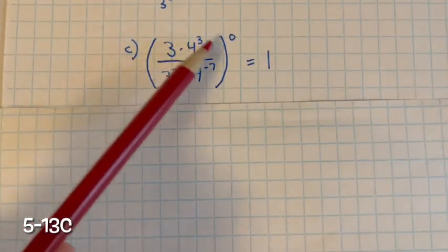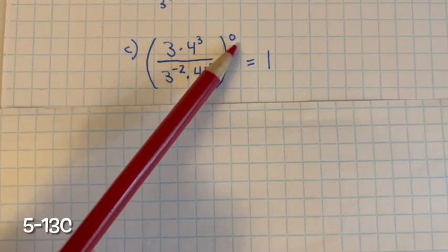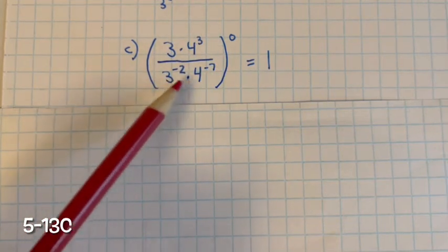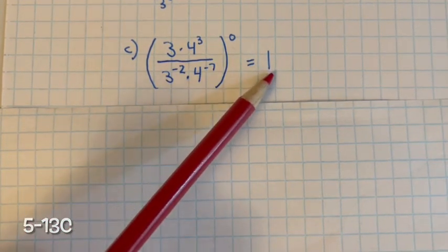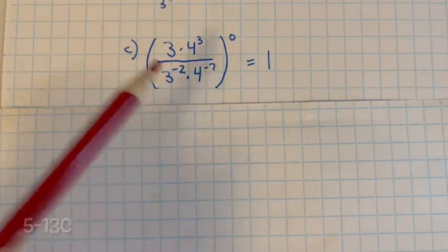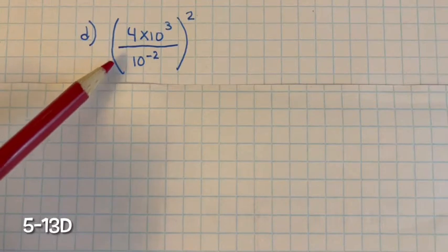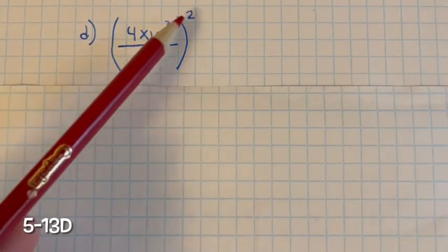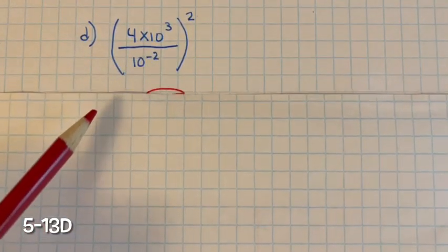For part C, you have an expression inside parentheses raised to the zero power. If you realize that all of this is raised to the zero power, it equals 1 — anything to the zero power equals 1. For part D, we have an expression raised to the second power, so we have to distribute this 2 to each term inside the parentheses.